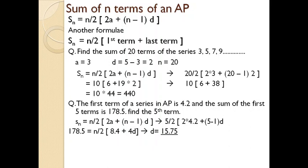By substituting the available values you can find the value of d, since we don't have any other numbers apart from the first term of the series. The common difference d works out to 15.75. Now we need to find the fifth term. Using the arithmetic progression equation a_5 = a + (n−1)×d, which we learned in the first case, and substituting a = 4.2, n = 5, and d = 15.75, you will get 67.2. That is the fifth term of the series.